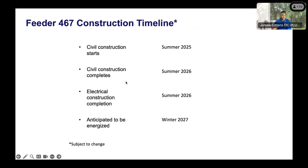For the civil construction timeline, once the contractor is awarded the project, construction is scheduled to begin in summer 2025. It should take about a year to complete. Following the civil work — installing all the civil components — the electrical construction will start, primarily pulling lines through the civil infrastructure, then ultimately energizing in the winter of 2027.